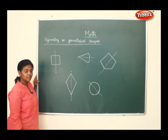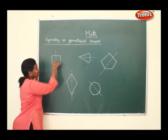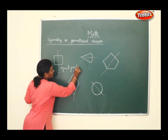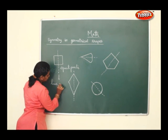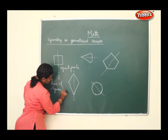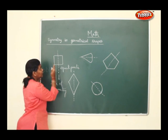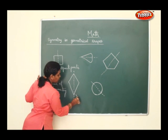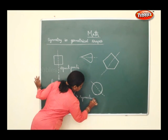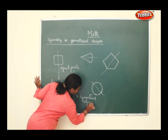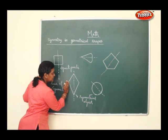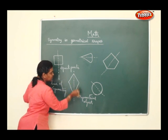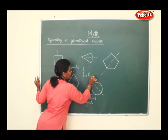Now let us see symmetry in geometrical shapes. The line of symmetry divides the figure into equal parts. It divides into the mirror image and divides it equally — this side is the mirror image of that side, divided equally. This is called the line of symmetry, and these are called symmetrical objects. The dotted lines represent the line of symmetry.